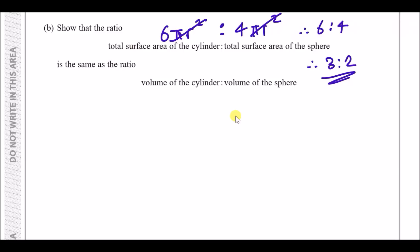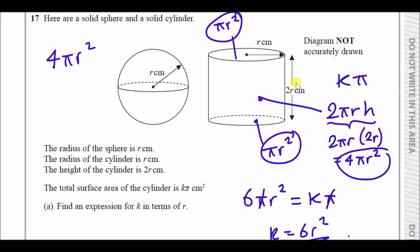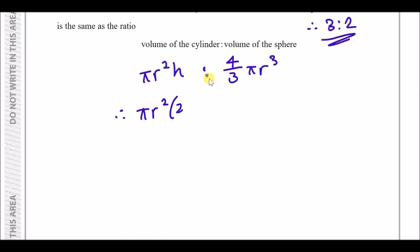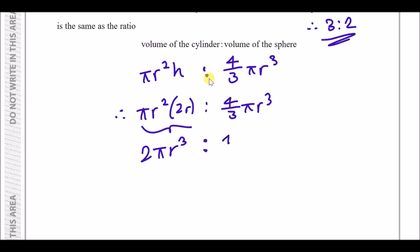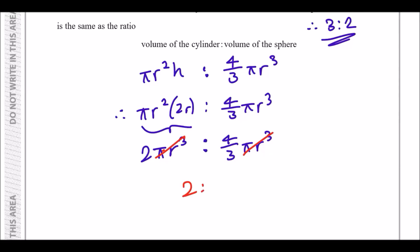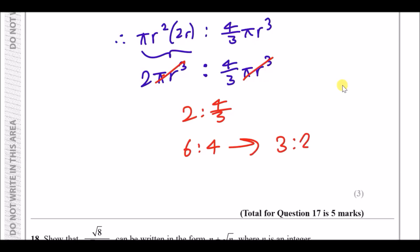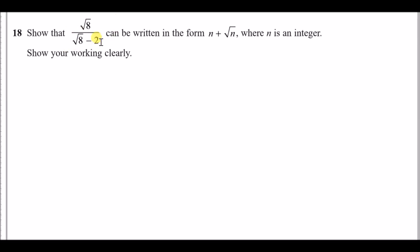Now do the same for volume. The volume of a cylinder is πr² × height, and the volume of a sphere is (4/3)πr³. Substituting height = 2r, the cylinder's volume is πr² × 2r = 2πr³. The ratio is 2πr³ : (4/3)πr³. Cancel πr³ from both sides to get 2 : 4/3. Multiply through by 3 to clear the fraction: 6 : 4, which simplifies to 3 : 2 — the same ratio.